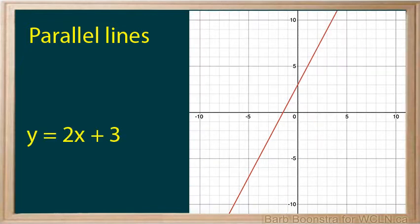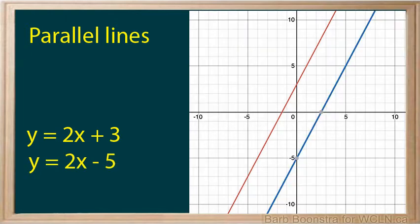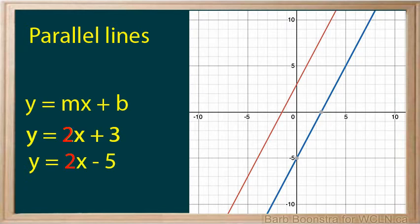The equation of this line is y equals 2x plus 3. Here is a line parallel to that. Its equation is y equals 2x minus 5. Let's find the slope of each line. Notice that the slope for each line is 2. The slopes of parallel lines are equal.